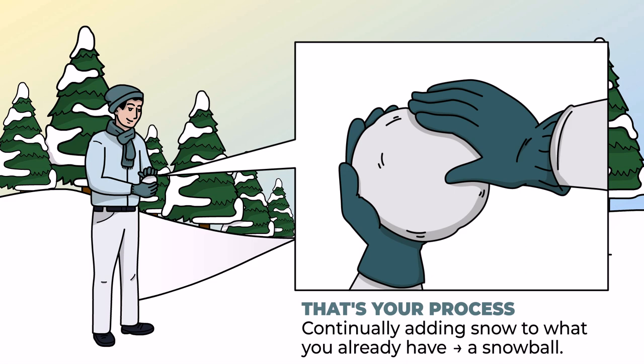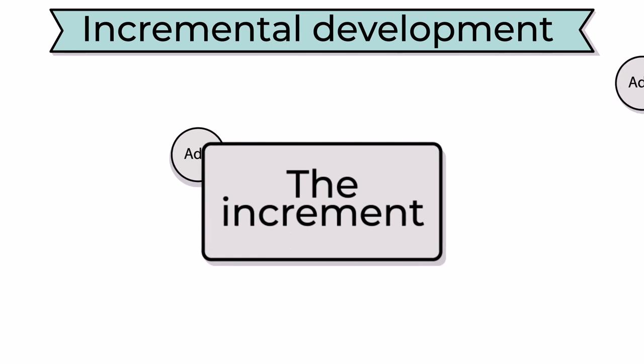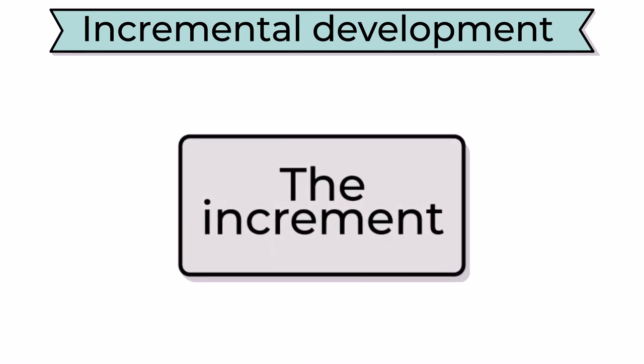Each time you add snow to the snowball, it gets bigger, but it's still called a snowball. It's the same way in incremental development. You create something very small and call it the increment. You continually add to the increment, but each time you're done adding to it, it's still called the increment.